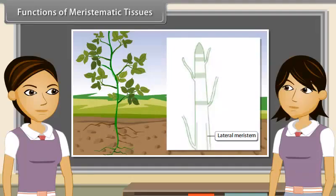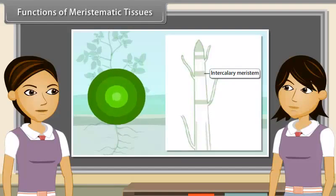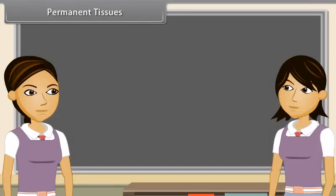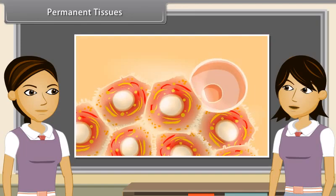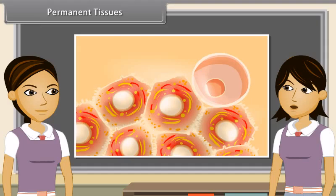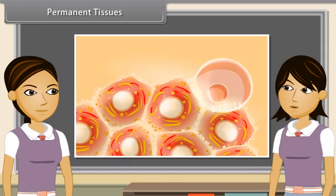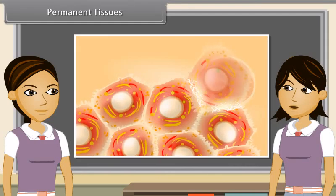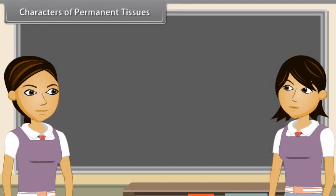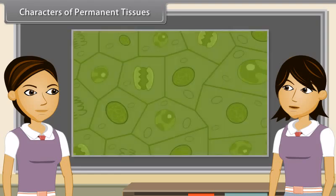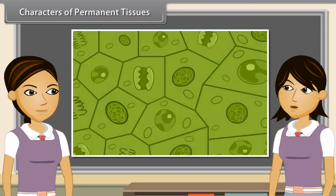The main function of meristematic tissue is the formation of new cells continuously. Apical meristem increases the height of the plant due to elongation of the root and stem — this is also called primary growth. Lateral meristem increases the diameter of the plant, also called secondary growth. Intercalary meristem increases the length of an organ.